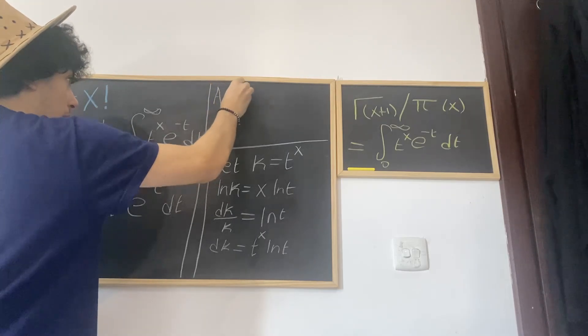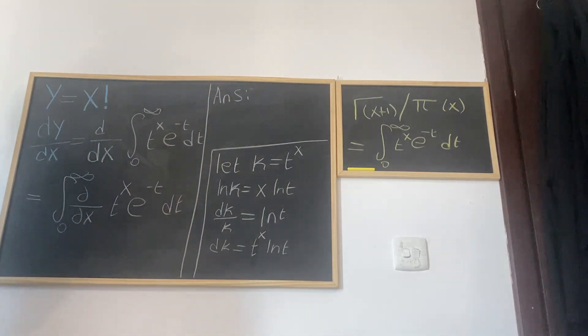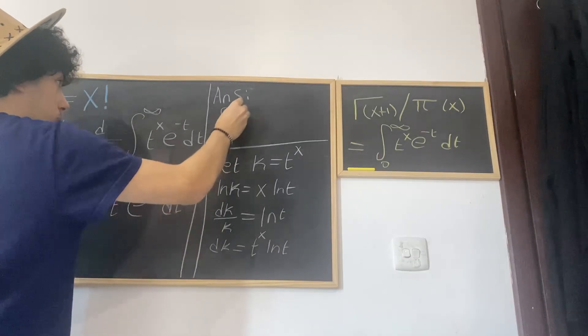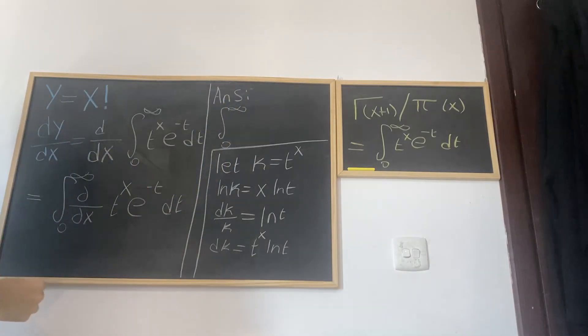So the differential of the factorial function is just the integral from 0 to infinity of t^x multiplied by ln(t) multiplied by e^(-t) dt.